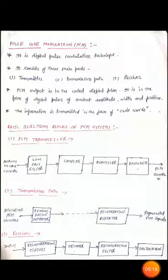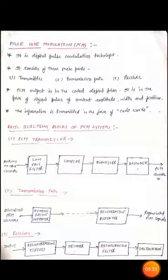PCM has mainly three parts: first is the transmitter, second is the transmission path, and third is the receiver. The PCM output is in coded digital form — digital pulses of constant amplitude, constant width, and constant position. The information is transmitted in the form of a code word. The basic building block of a PCM system mainly has three parts: PCM transmitter, transmission path, and receiver.